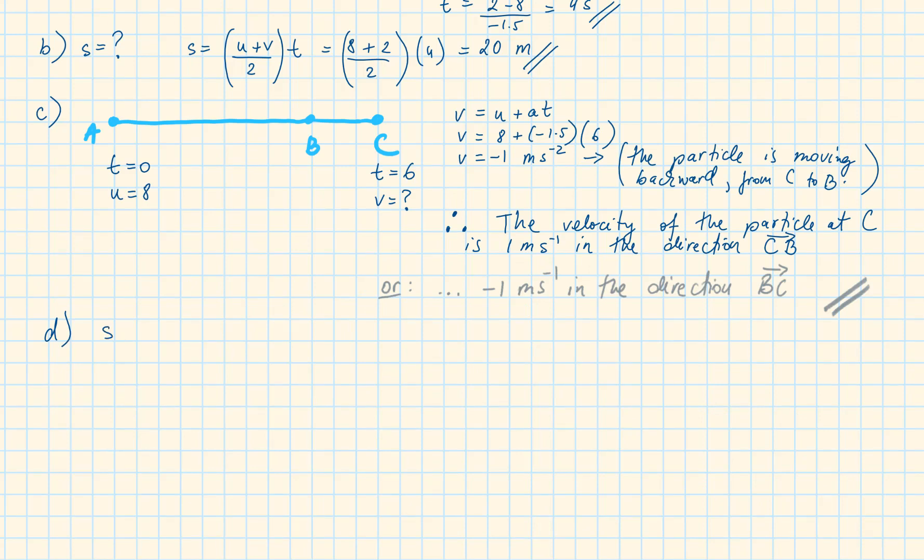And finally, part D, we need to find the distance from A to C. Using the trapezium formula, S equals U plus V over 2 times T, replacing the values of U, V and T, noticing that the V is equal to minus 1 from the previous point, we find that S is equal to 21 meters.